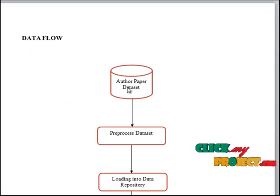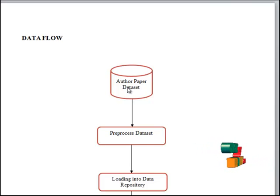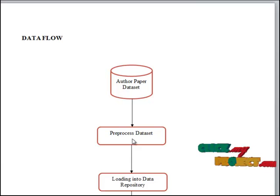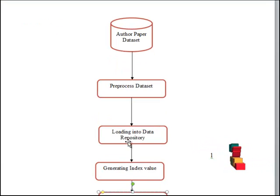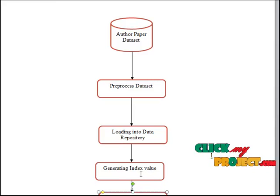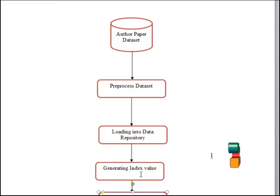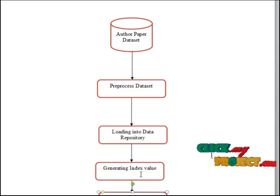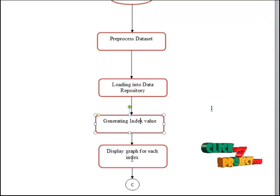In the data flow, first we are going to import the author-paper dataset, and then pre-process it. The pre-processed dataset is then loaded into the data repository. After that, the index value has to be generated because the index method has to be implemented. We are going to generate the index value for each attribute in the dataset, and then display a graph for each index.